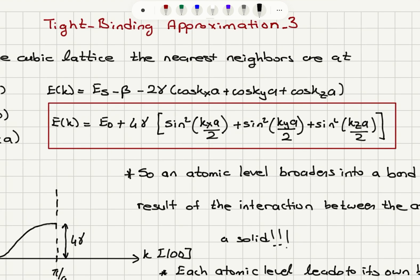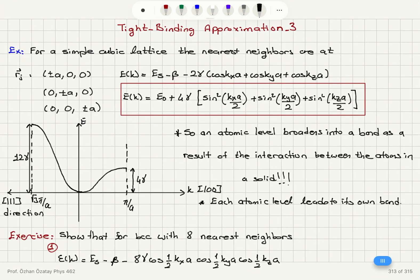If this is not a one-dimensional situation, then we have to add up cosine(KxA) plus cosine(KyA) plus cosine(KzA). Using the other version, we have E0 plus 4γ times sine-squared(KxA/2) plus sine-squared(KyA/2) plus sine-squared(KzA/2). It was just k·R, so it's k·Rj.